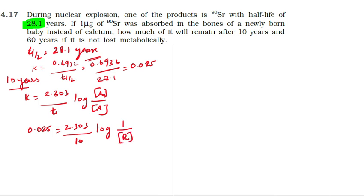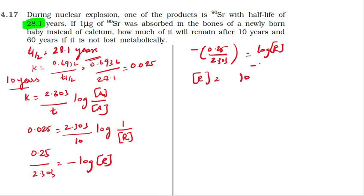Solving, we get 0.025 times 10 divided by 2.303 equals log of 1 by R. Calculating this gives log R equals minus 0.109. Taking antilog, R equals 0.735 microgram remaining after 10 years.